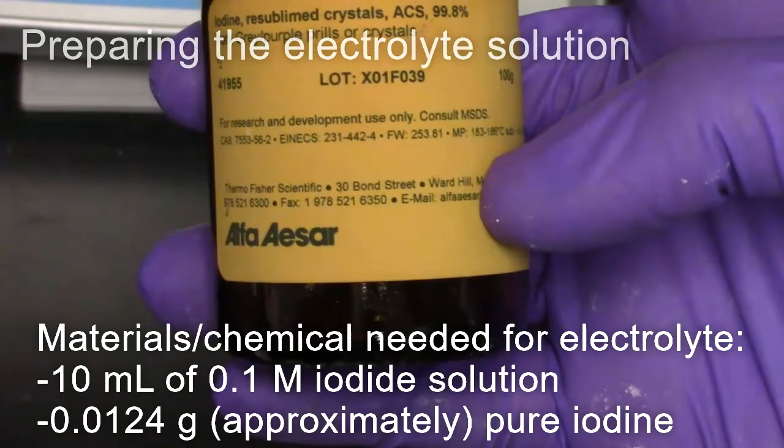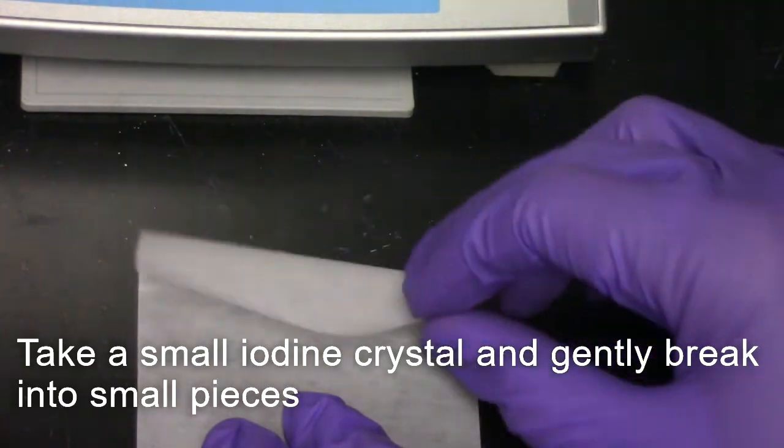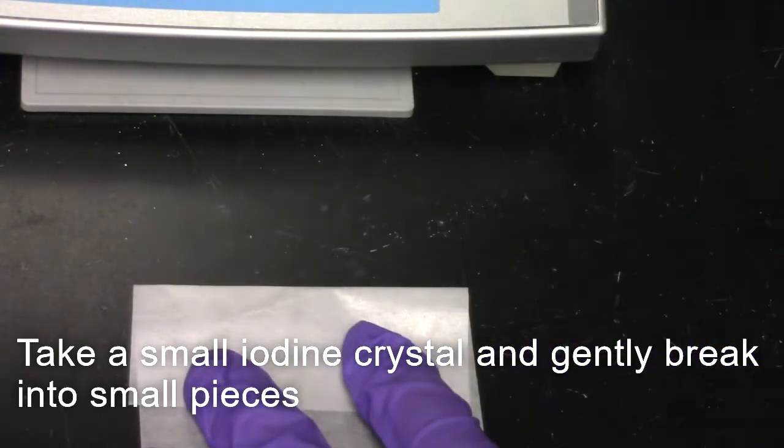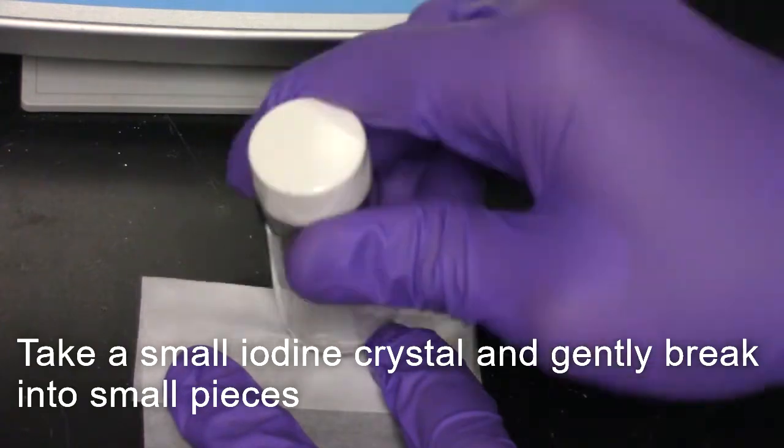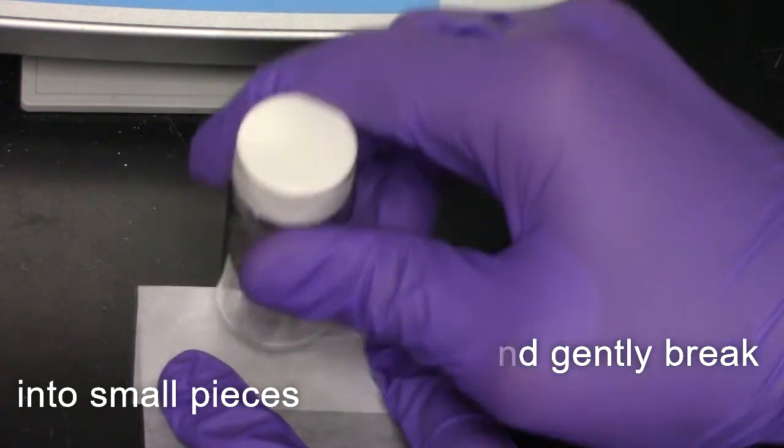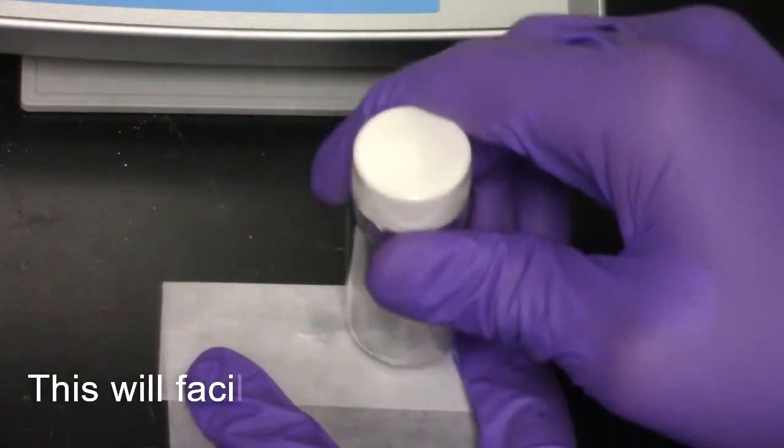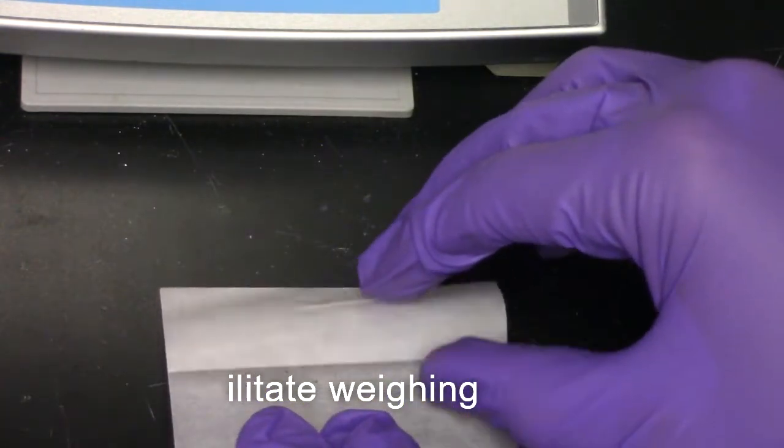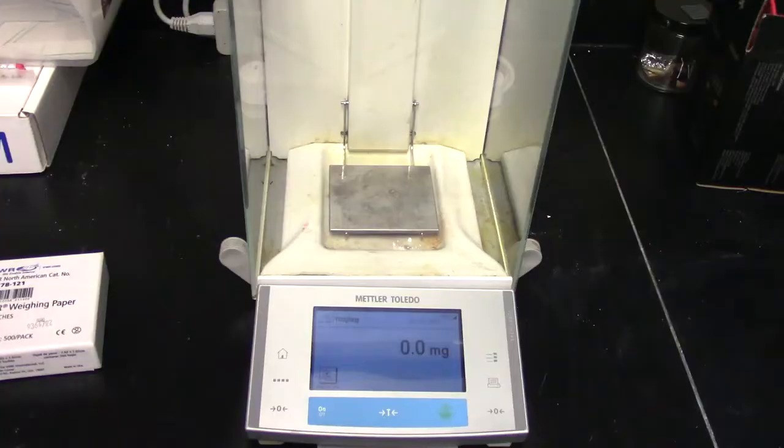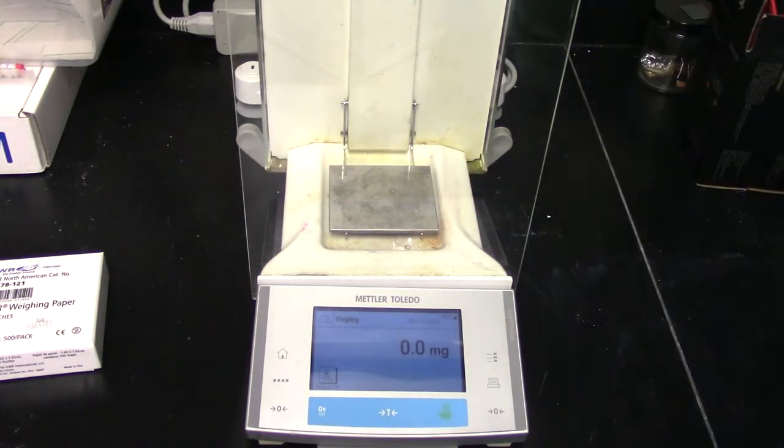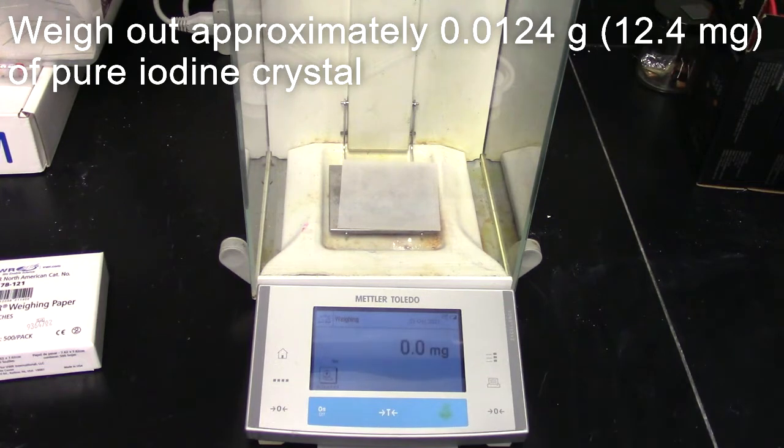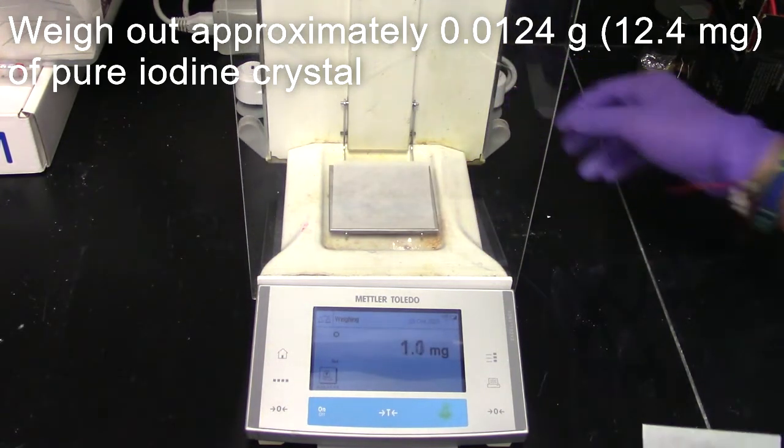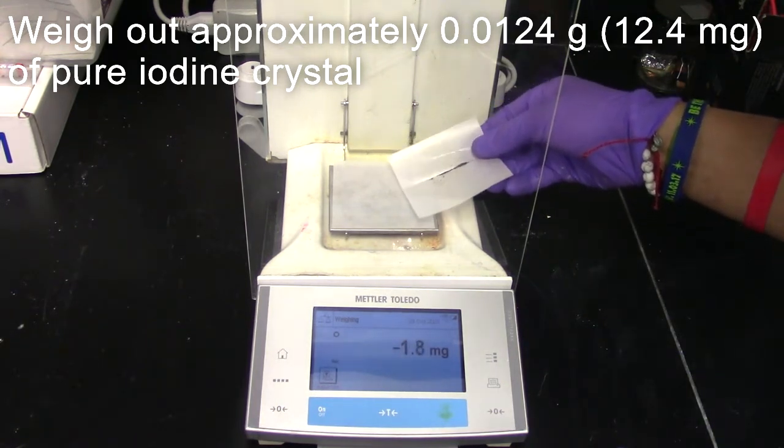Next step is to prepare the electrolyte solution. To begin, take a small amount of iodine crystal and gently break into smaller pieces. This will facilitate the weighing process. Carefully weigh out 0.0124 grams of the pure iodine crystal or approximately 12.4 milligrams.